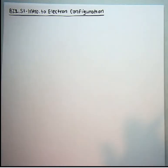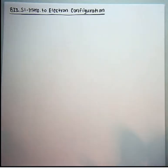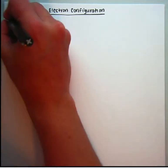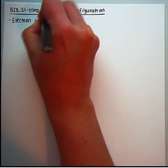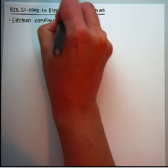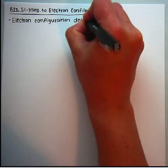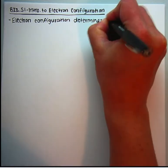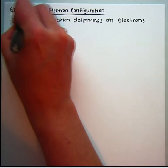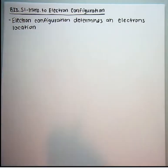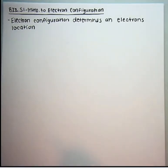This lesson will cover Big Idea 2 Standard 1, and the topic for today is Intro to Electron Configuration. Electron configuration is kind of like the electron's address — it determines an electron's location. We know from the first unit that we find electrons in the electron cloud, and the electron configuration will tell us where in that electron cloud we are likely to find that electron.